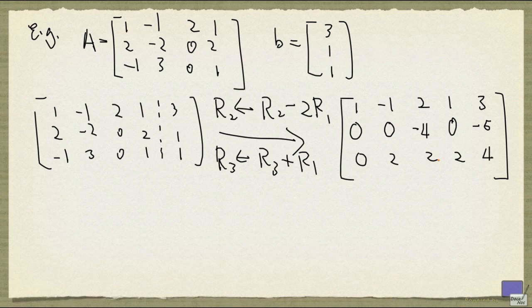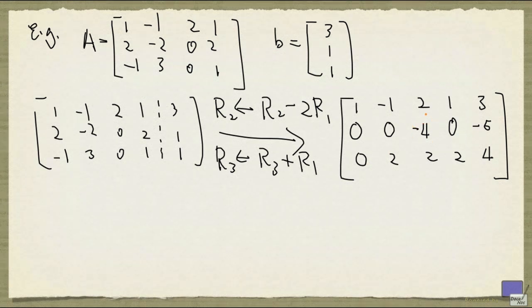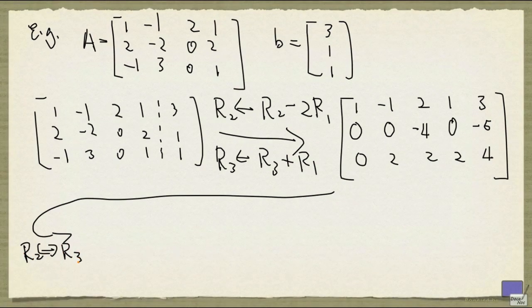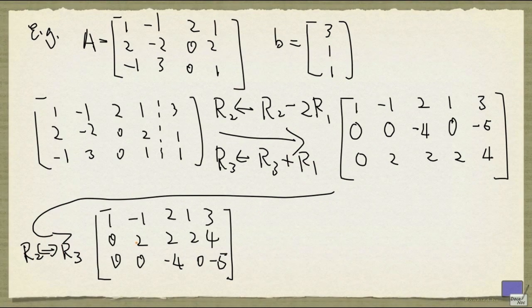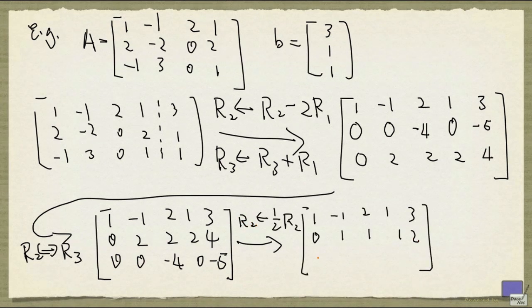As you can see, this is now one step closer to what we want to get at the end. Notice that in the third row, the leftmost nonzero entry is left of the leftmost nonzero entry in the second row. And in this case, what we want to do is we're going to swap the two rows. So we're going to interchange row 2 and row 3. And now if you look at row 2, the leftmost nonzero entry is not a 1. So I'm going to multiply row 2 by 1 half.